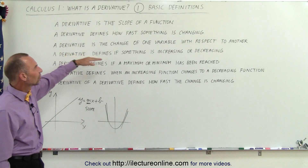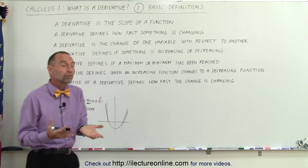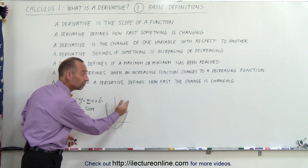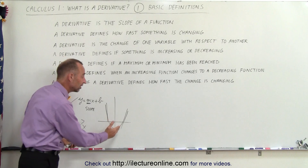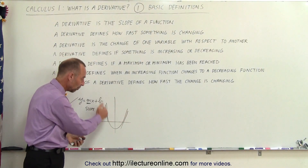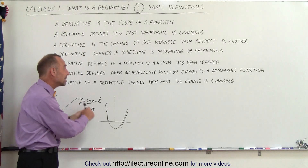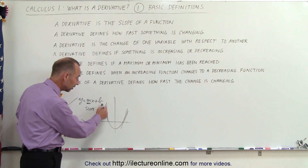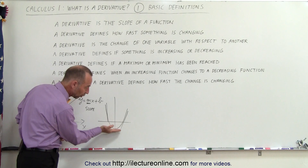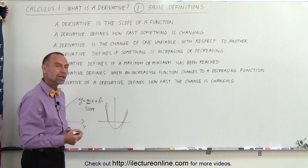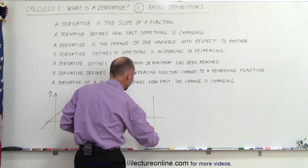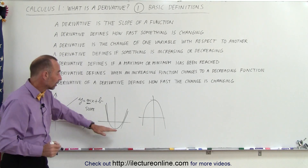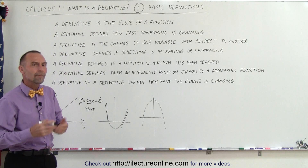A derivative also defines if something is increasing or decreasing. The derivative tells you whether the increase is positive or negative. For example, here we have a positive slope, so we can say the function is increasing. Here the slope is negative, so we can say the function is decreasing. A derivative also defines if a maximum or minimum has been reached — at some point the function reaches the lowest point possible, which is a minimum, or it can reach a maximum value. The derivative can help us find minimum and maximum values of a function.